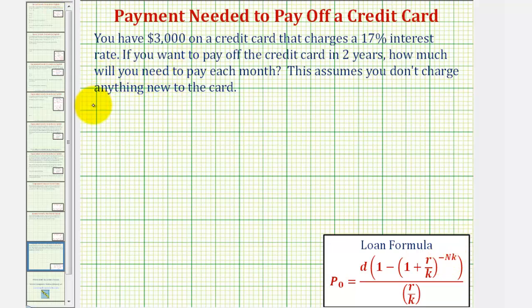So from the given information, P sub zero equals $3,000. The credit card charges 17% interest, so R equals 17%, which as a decimal would be 0.17. You want to pay off the credit card in two years, so N equals two years. And again, you're making monthly payments, so K is equal to 12. We're trying to find the monthly payment, which would be D.